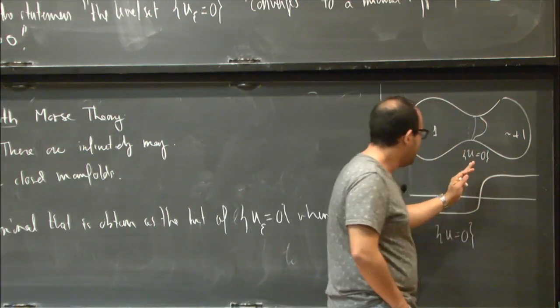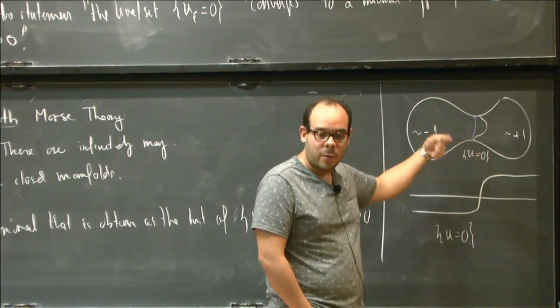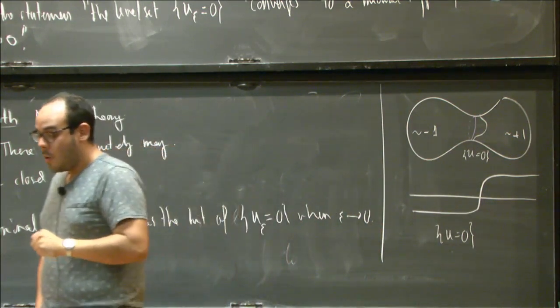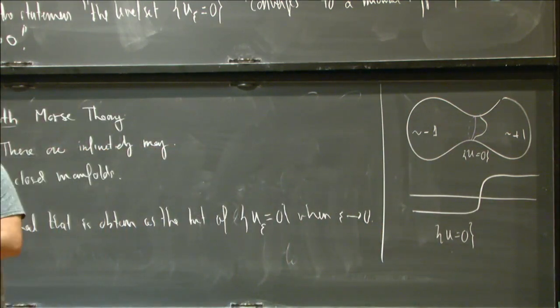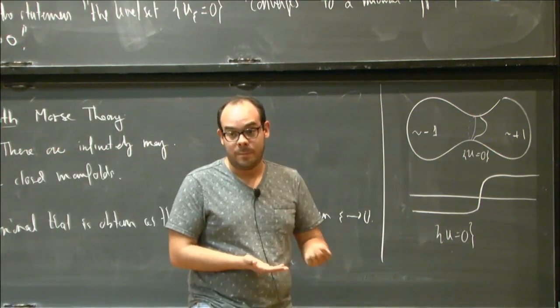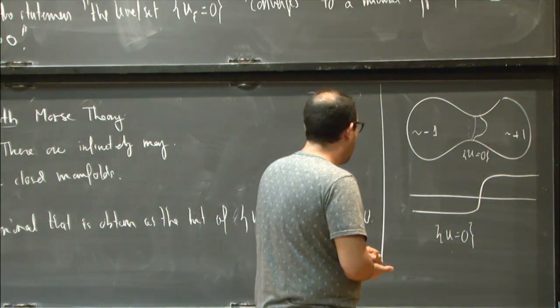And in this case, so if the picture was more or less like this, probably what's going to happen is that this level set is going to converge to this stable minimal surface. But to make these... So the convergence here you can measure in different ways. So a particular way of doing it is in the sense of varifolds. This was actually done in this context by Ilmanen when he was studying the parabolic flow. So he proved that the parabolic flow of this converged to the mean curvature flow.